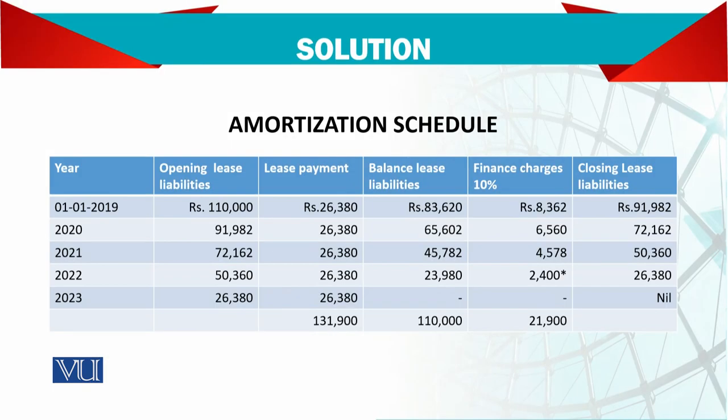Now for the amortization schedule. The columns are important — which one should be column 1, 2, 3, 4, 5, and 6 — because that will decide how to report figures in the income statement and balance sheet.